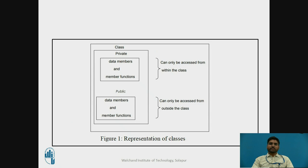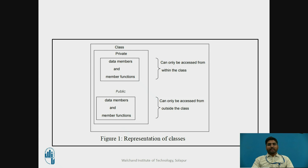As Figure 1 shows, in the private section you can have data members as well as member functions, and in the public section you also have data members and member functions. However, public members can be accessed from outside the class, while private members are accessed only within the class — there is no entry from outside. Whatever you write in private can be accessed only within the class, and whatever we write in public can be accessed both within and outside the class.